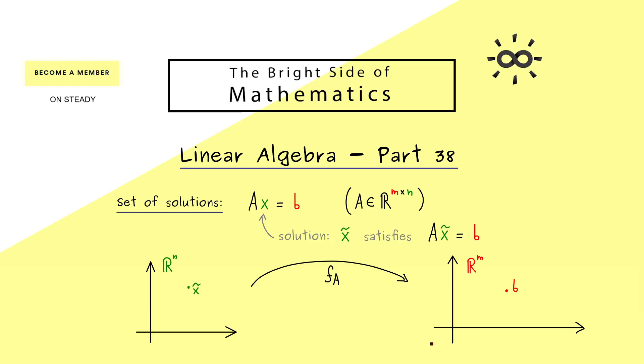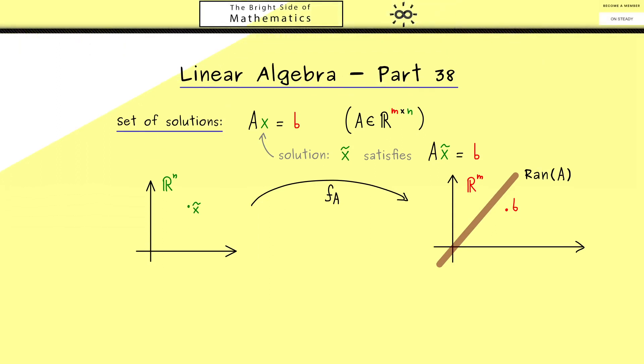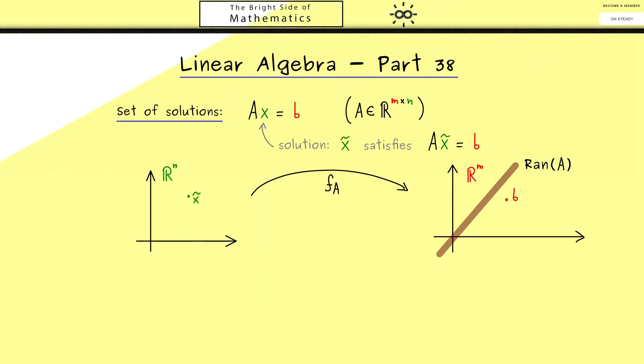Now I can tell you that we have learned in former videos that the range of A is a subspace on the right hand side. Therefore we can conclude that the solution set is empty if b does not lie in the range of A. So you can remember the range of A already tells us about the existence of solutions. But now if indeed b lies in the range of A, we know there exists at least one x tilde such that x tilde is mapped by f_A to b.